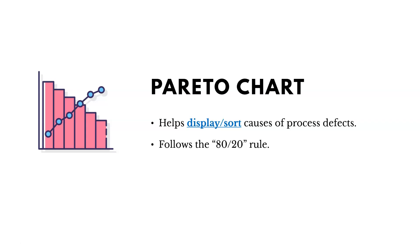So now let's talk about the Pareto Chart. What it does is it helps us display and sort the causes of process defects — what are the sources of those things?